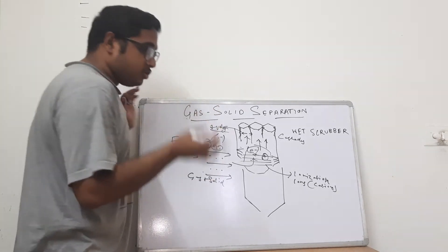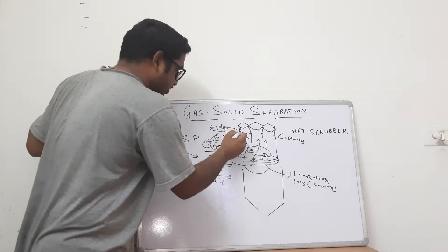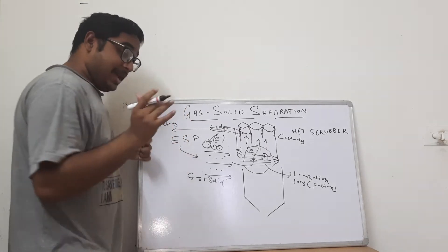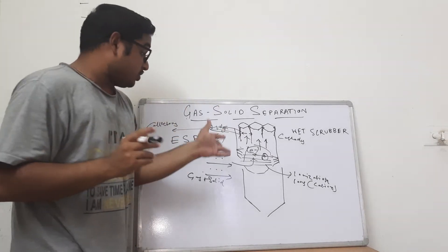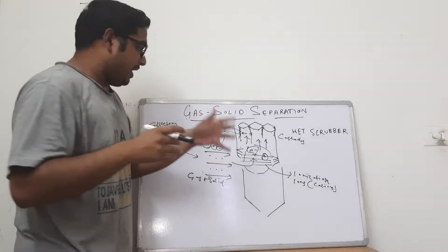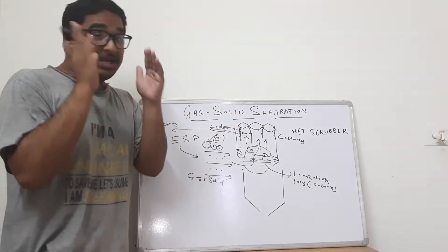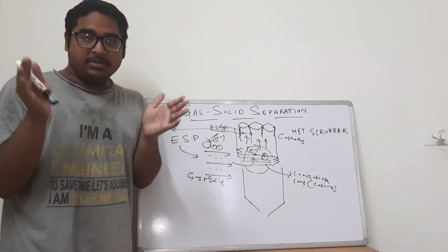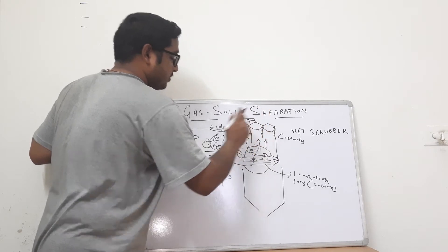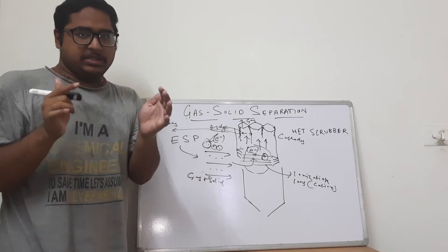The electrons deposit on the solid particles in the charging portion, and then in the collecting section — called the collectors — the solids with negatively charged electrons deposited on them get attracted towards the positively charged cathodes or electrodes and are thereby separated from the gas-solid system. The pure gas then exits through the honeycomb exit structure.